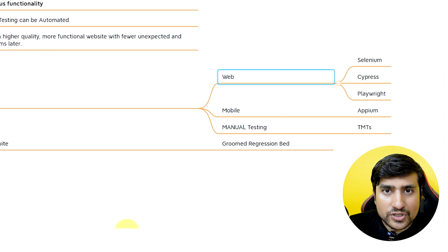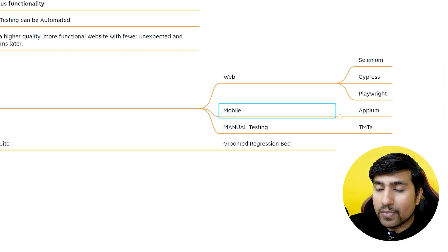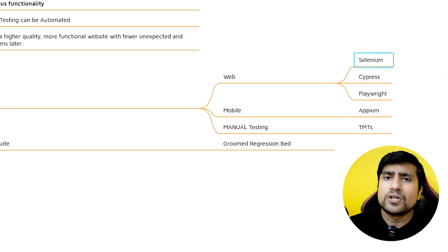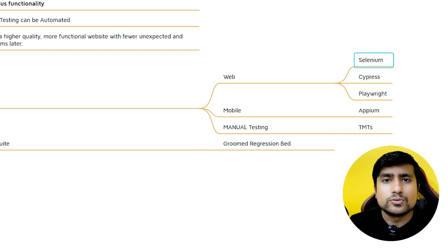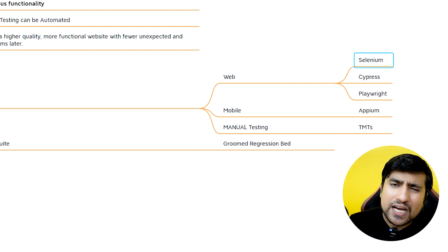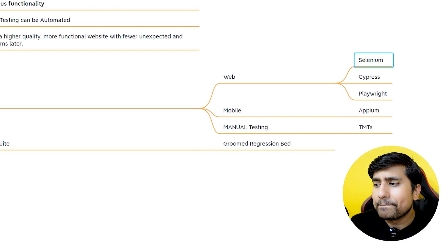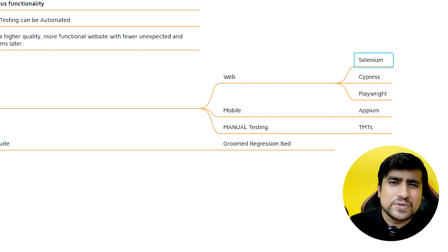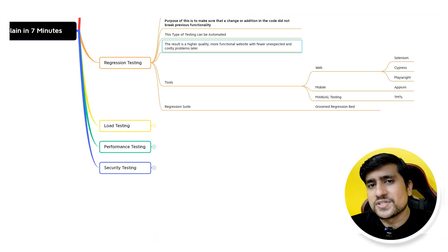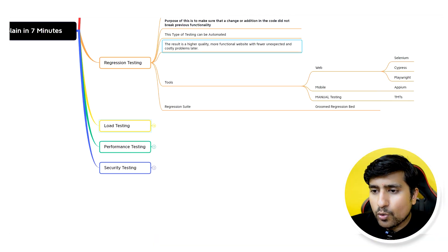The tools you use for regression testing depend on your environment. For web applications you can use Selenium, Cypress, or Playwright. For mobile you can use Appium, and for test management you can use TMS tools. In summary, regression testing ensures that additional changes don't break existing functionality.